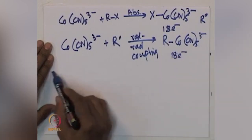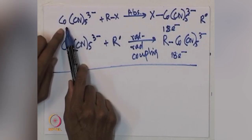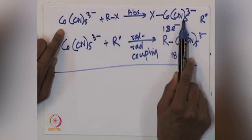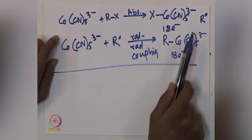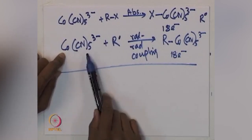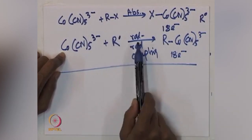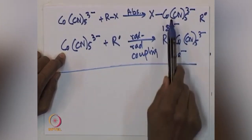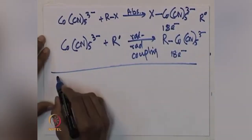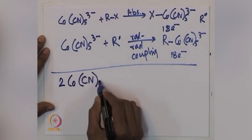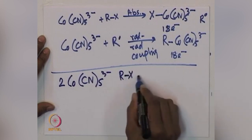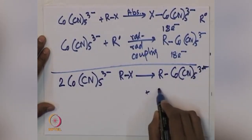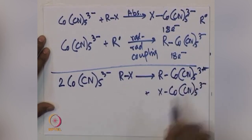This is again an 18-electron species. So what we have seen: the cobalt pentacyanide species reacts with Rx to give X-Co(CN)₅³⁻ along with R radical formation. This radical combines with the cobalt, which is again a 17-electron radical intermediate, to give radical-radical coupling, overall yielding R-Co(CN)₅³⁻ and X-Co(CN)₅³⁻. Combining these two steps, two molecules of the cobalt species react with Rx to give R-Co(CN)₅³⁻ plus X-Co(CN)₅³⁻.